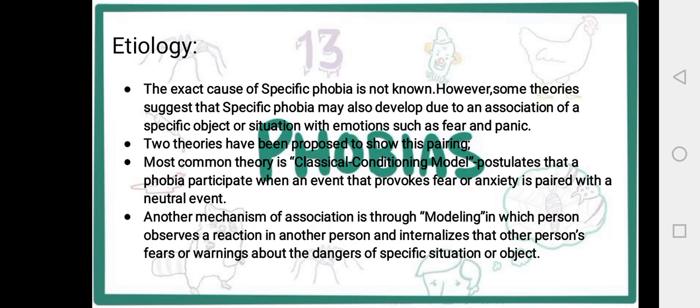Two theories have been proposed to explain this pairing. The first is the classical conditioning model. It postulates that a phobia develops when an event that provokes fear and anxiety is paired with a neutral event. In classical conditioning, the individual must directly face that situation — for example, someone experiencing social anxiety when encountering crowded places.